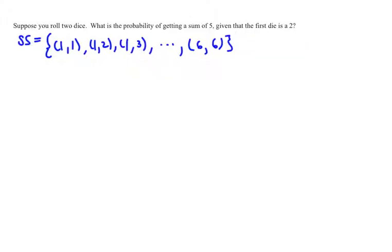we actually have given information—we're told that the first die is a 2. So we have that understanding, that knowledge. Since we know that, we don't need to use this giant sample space.